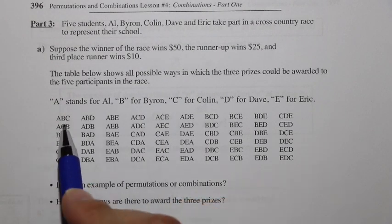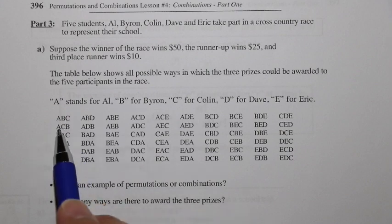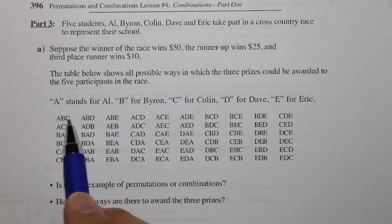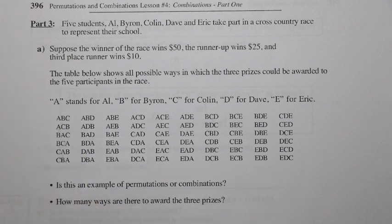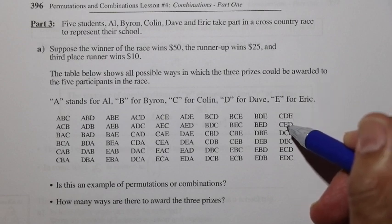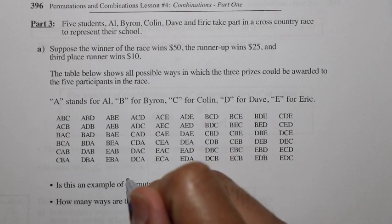Because Al being first, Byron being second, and Colin being third is different than Al winning first, Colin winning second, and Byron coming in third — those two outcomes are different even though they involve the same three people. Similarly, Colin first, Dave second, and Eric third is different than Colin first, Eric second, and Dave third, even though those are the same three people. This is an example of permutations.